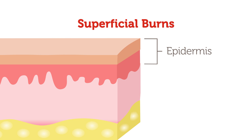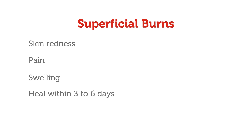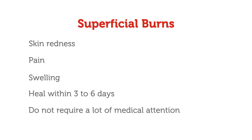A sunburn is a good example of a superficial burn. When you have a superficial burn, the most common things you may notice at first are skin redness, pain, and swelling. These types of burns usually heal within three to six days and do not require a lot of medical attention.